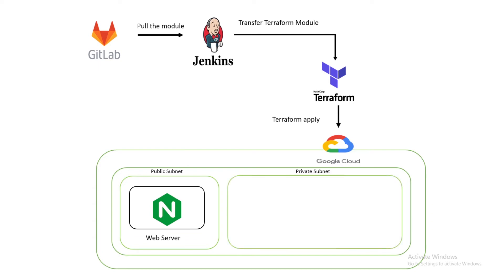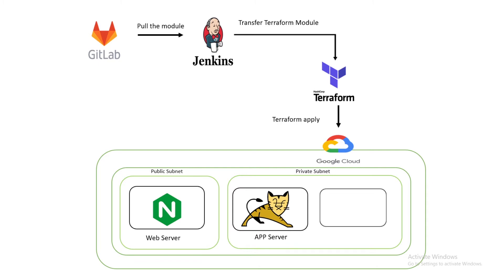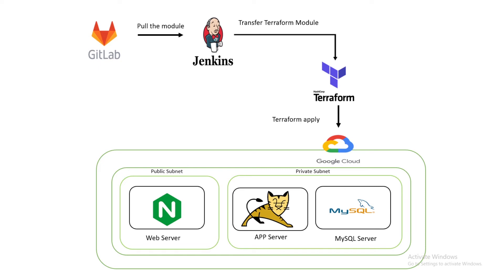In the final stage, Jenkins will execute Terraform apply on the Terraform server, which will provision the GCP public instance for the web server, private instance for the app server, and another private instance for the database. Finally, all public and private instances and the database will be provisioned in GCP.